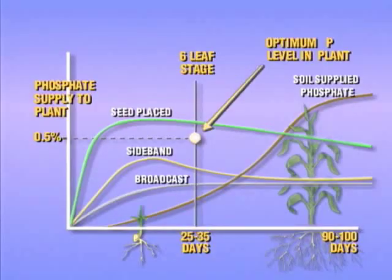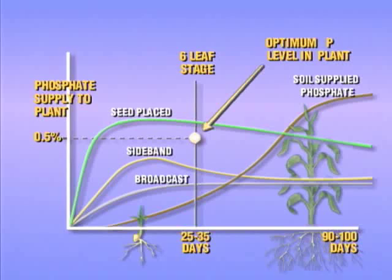Alpine liquid is applied at the time of planting in the seed furrow. The result? Enough phosphate is supplied to the plant to get it past the critical six-leaf stage, after which the root system is able to intercept enough from the soil solution.